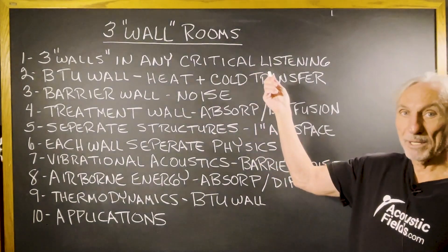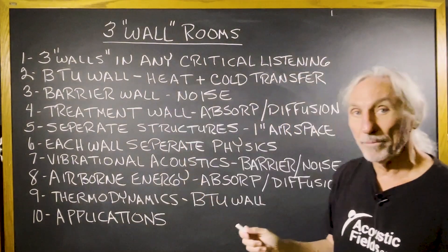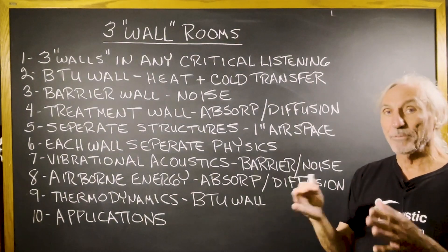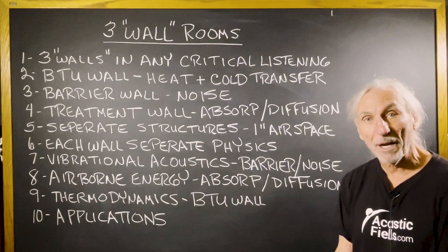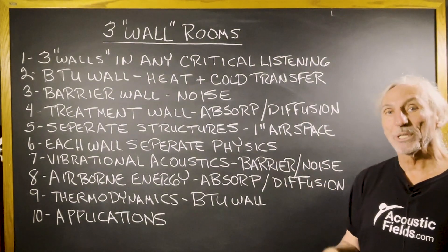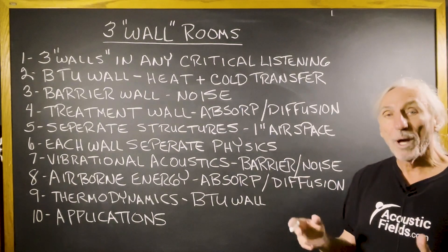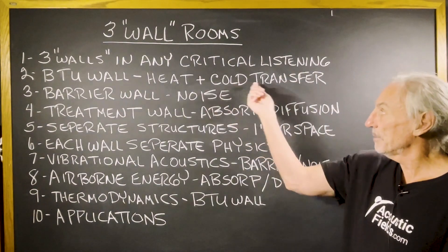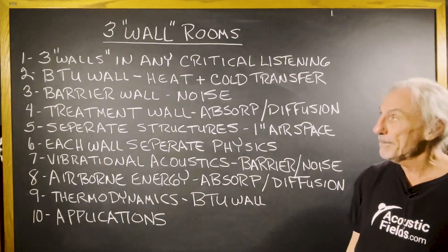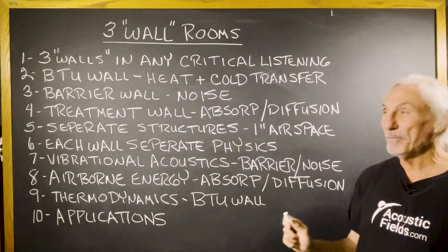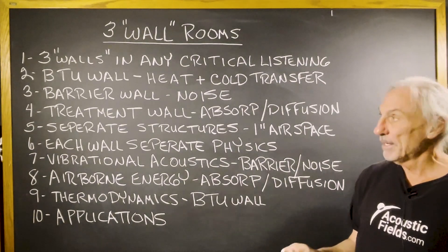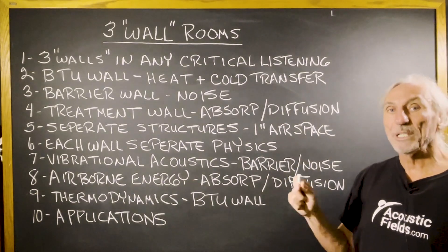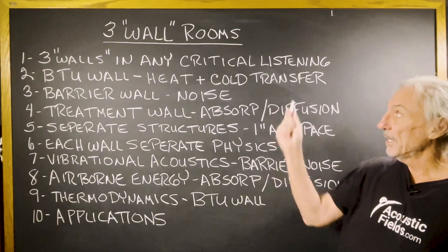We have three walls in any critical listening environment. We have the BTU wall, which is governed by city, county, and state codes — you have to have so much insulation, so much R-value — all these restrictions to comply with the weather for that particular region of the country. We call that our BTU wall; it deals with heat and cold transfer. The barrier wall is all about noise transmission. And then we have the treatment wall, which is absorption and diffusion. Those are all three separate structures that should be in any critical listening environment.